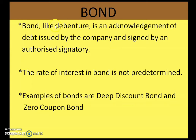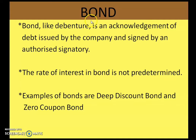Now, what is a bond? A bond, like a debenture, is an acknowledgement of debt issued by the company and signed by an authorized signatory. The only difference is that in a debenture the rate of interest is prefixed and fixed in advance, but in a bond the rate of interest is not predetermined. Examples of bonds include deep discount bonds and zero coupon bonds.